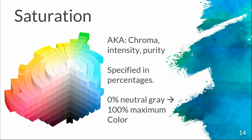Saturation — also known as chroma, intensity, or purity — is specified in percentages. It's our draw from 0%, a neutral gray, to the full force of that color at 100%. At 0% saturation, all color is removed; at 100%, it's really intense. When you switch photos to grayscale on your phone, that's essentially all the software is doing — removing the saturation. Or if you use a 'vivid' or 'dramatic' filter, it's increasing the saturation to add more power to each color.